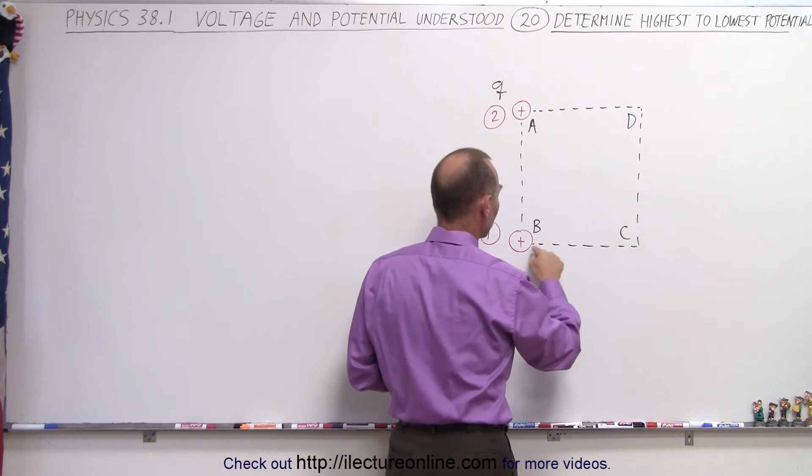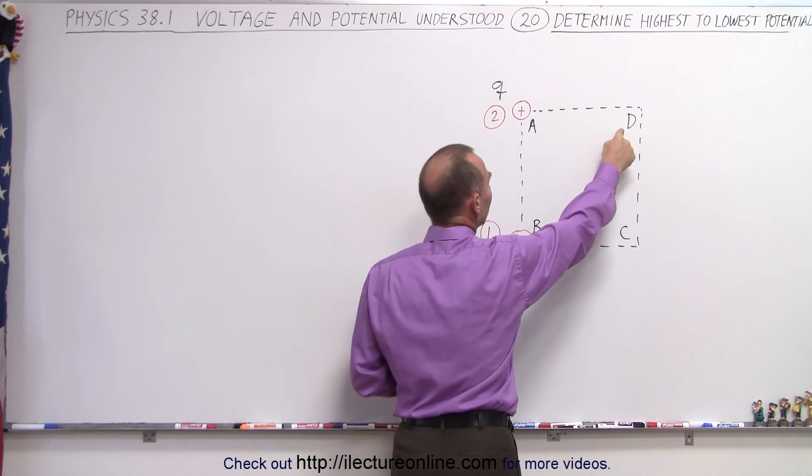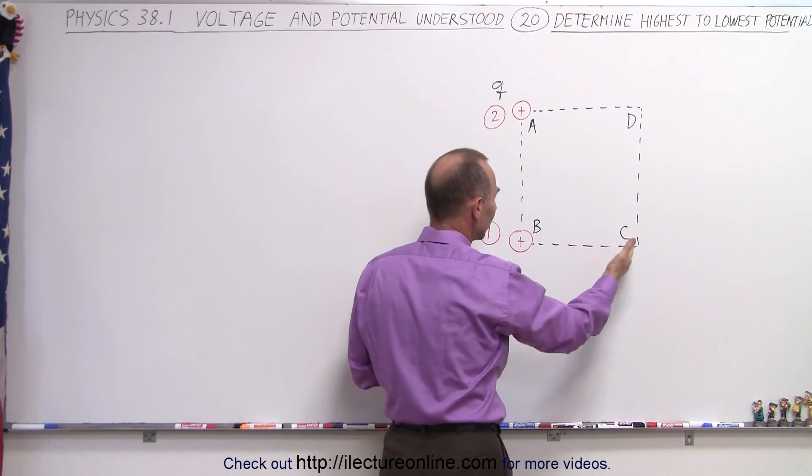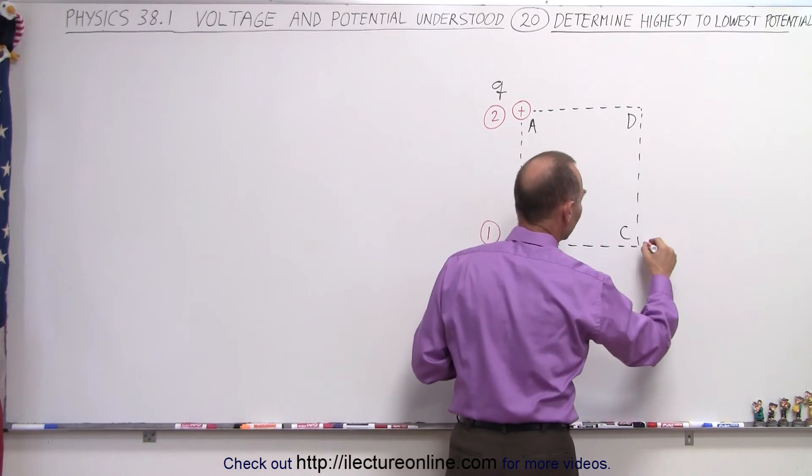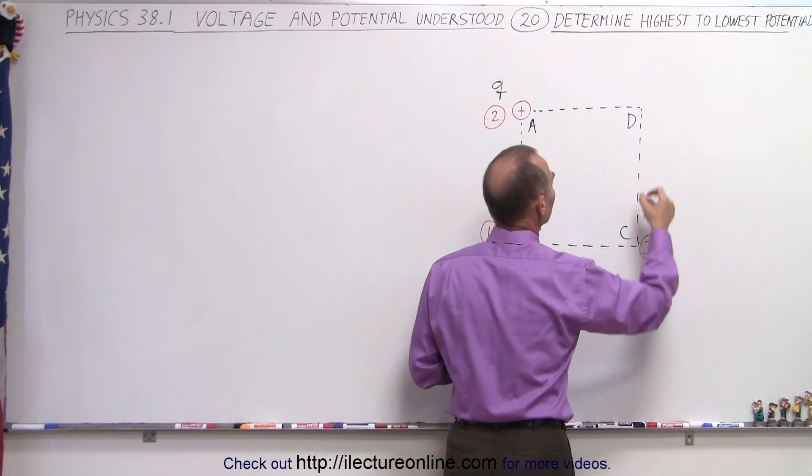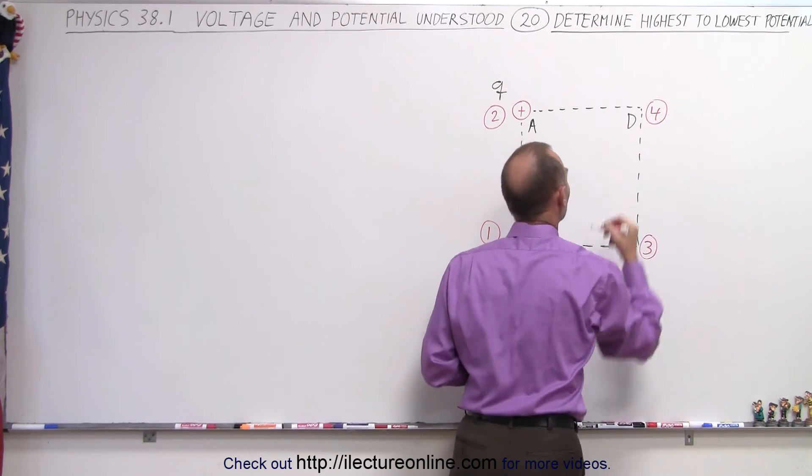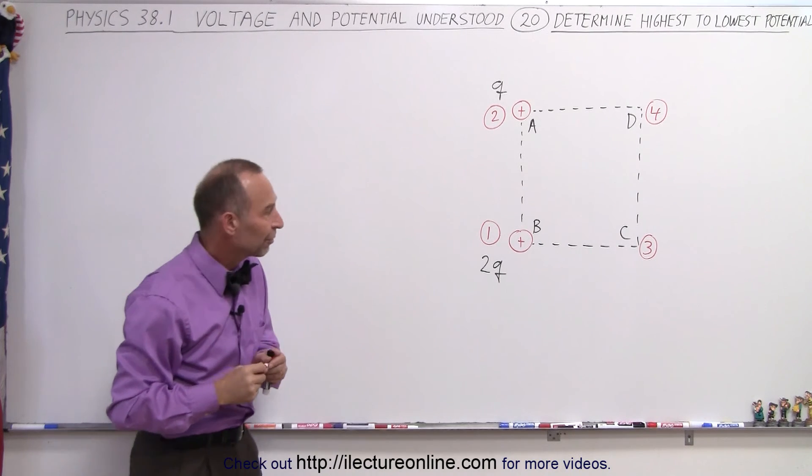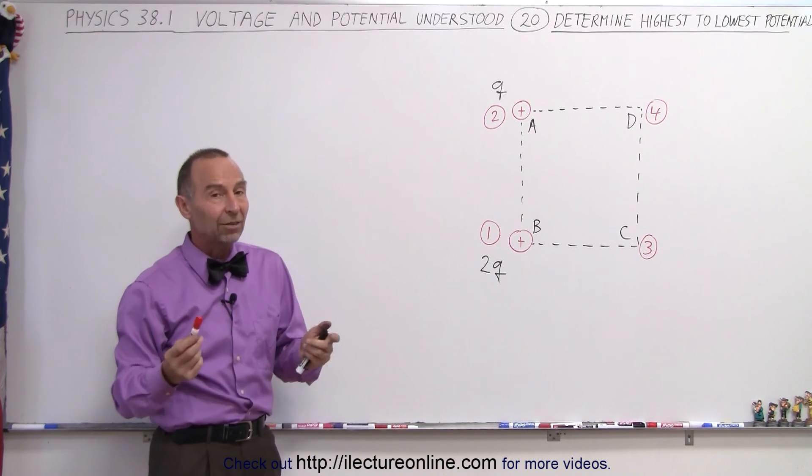So therefore, since C is closer to this charge than to this charge, and this one is farther away from here, we can say that C has the third highest potential, and D then would be in last place with the smallest potential, furthest away from the large charge.